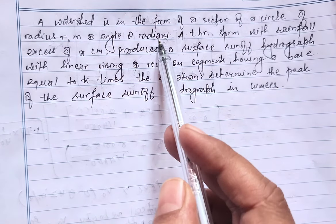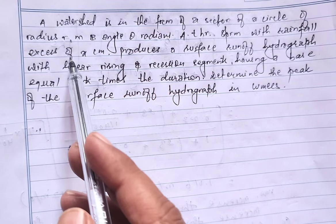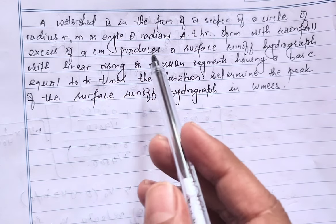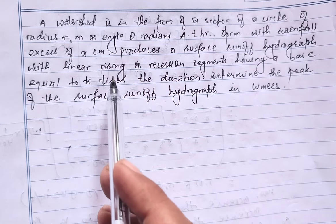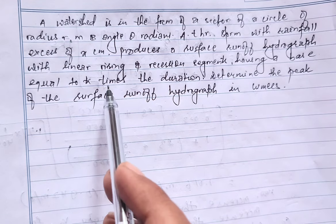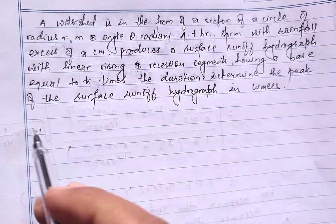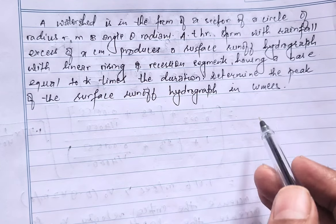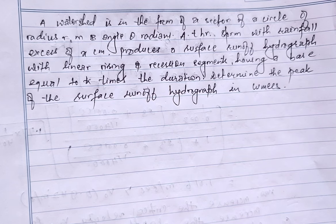At t hour strong with rainfall axis of x centimeter, it produces a surface runoff hydrograph with linear rising and recession segments having a base equal to k times the duration. Determine the peak of the surface runoff hydrograph in cumecs.